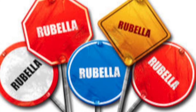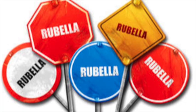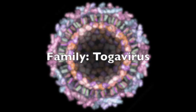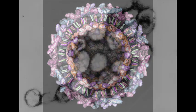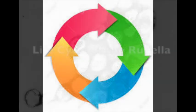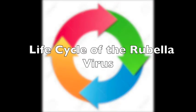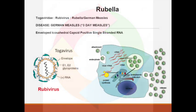The rubella virus is also known as the German measles or the 3-day measles. It is in family togavirus and genus rubivirus. The rubella virus is an enveloped virus with a circular shape about 60 nanometers in diameter. The virus is composed of a capsid core containing a single copy of genomic RNA, and the outer membrane is a lipid bilayer containing specialized glycoproteins that help it attach to its host.